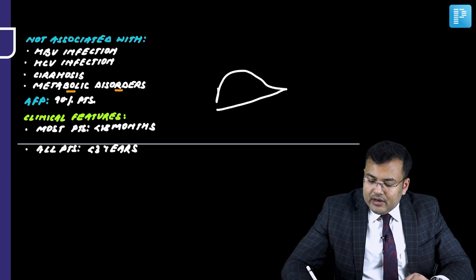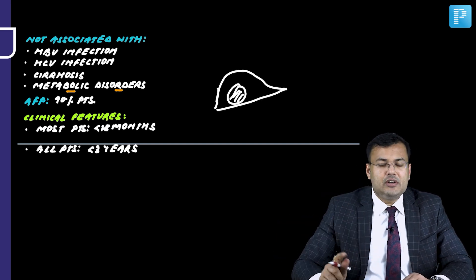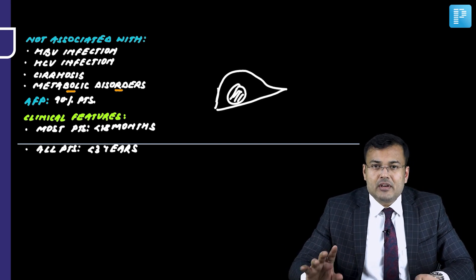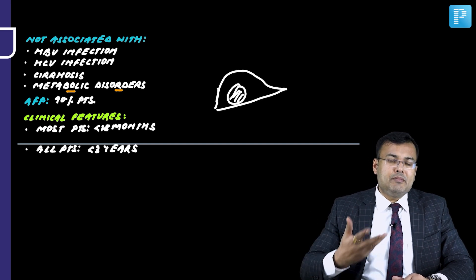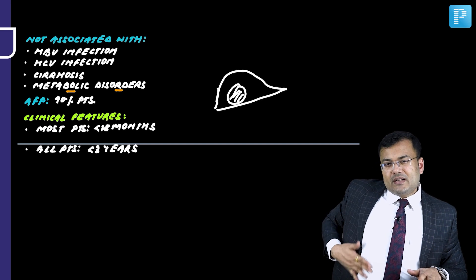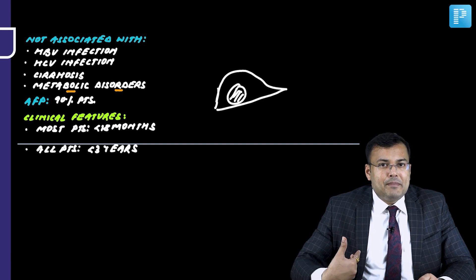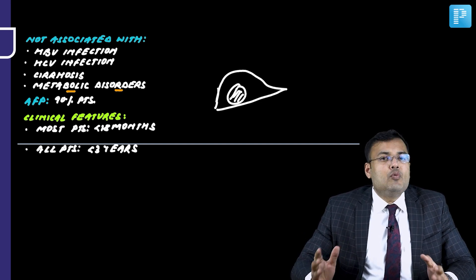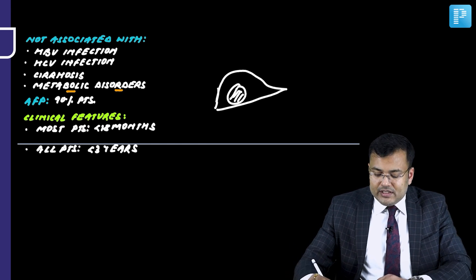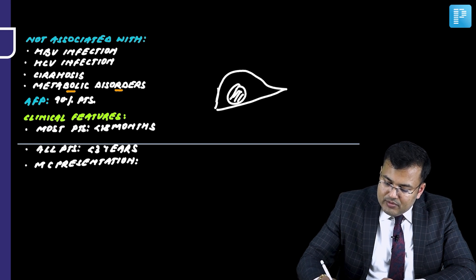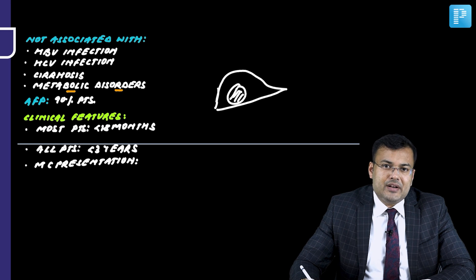Inside the liver there is a tumor. With time, the size increases and the liver enlarges. Since the patient is a child, there are often no symptoms. The mother notices a mass or lump while bathing or changing the baby's clothes. So the most common presentation in hepatoblastoma is an asymptomatic palpable intra-abdominal mass.